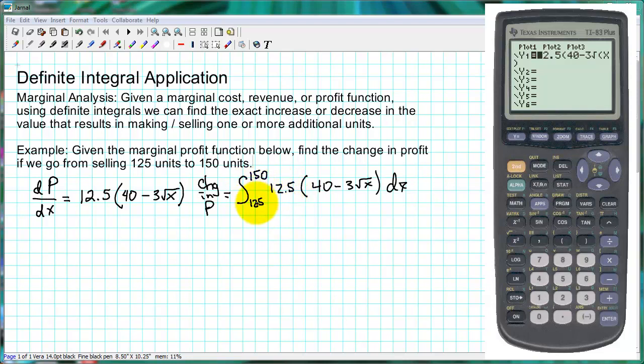We don't necessarily have to see the Y values, but I've chosen a window here where we'll be able to see the profit values. Our key part of doing this is our X max had to go up to at least 150. So if we sketch the graph here, we get this.